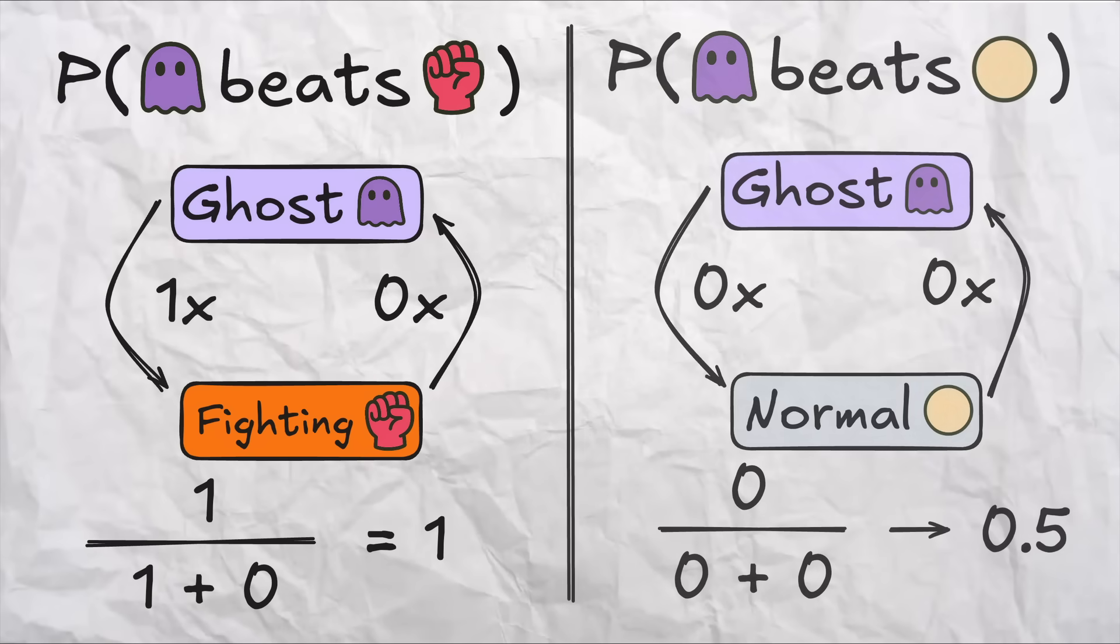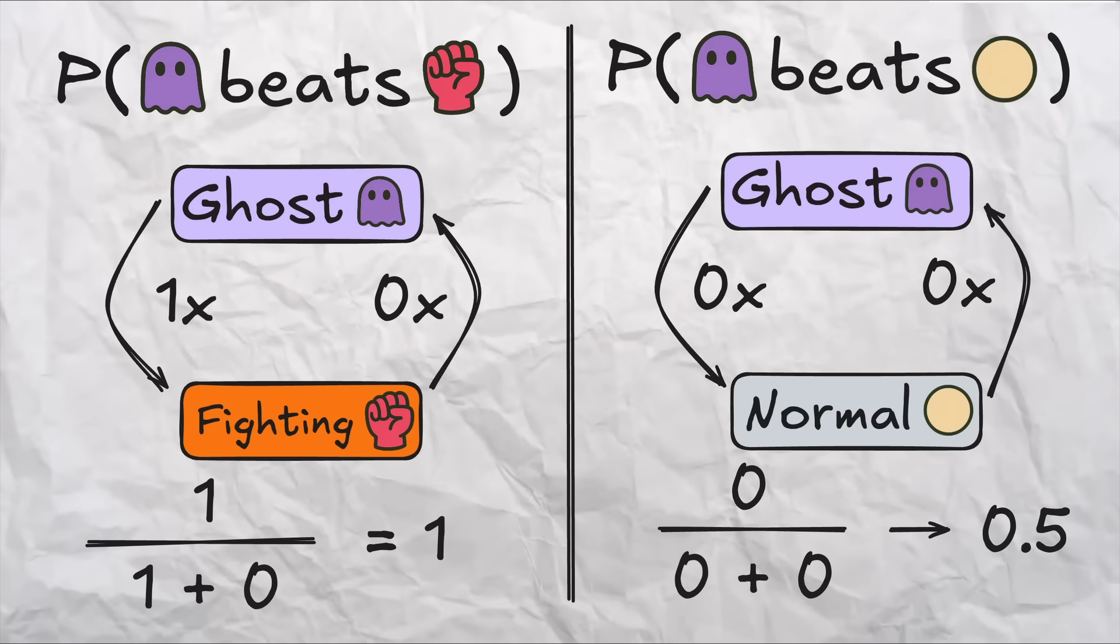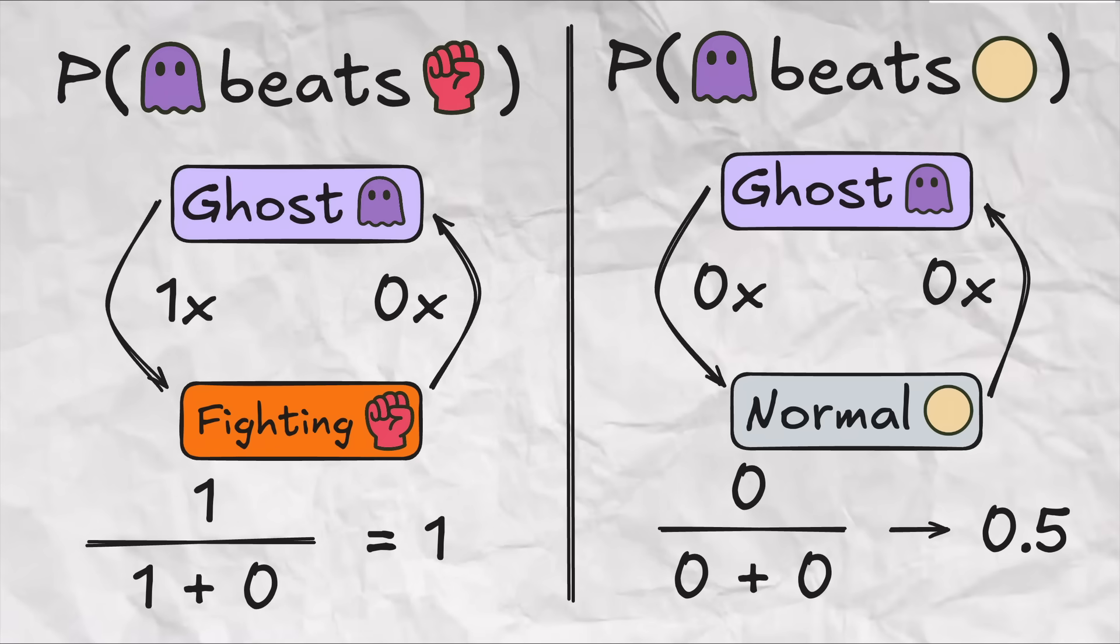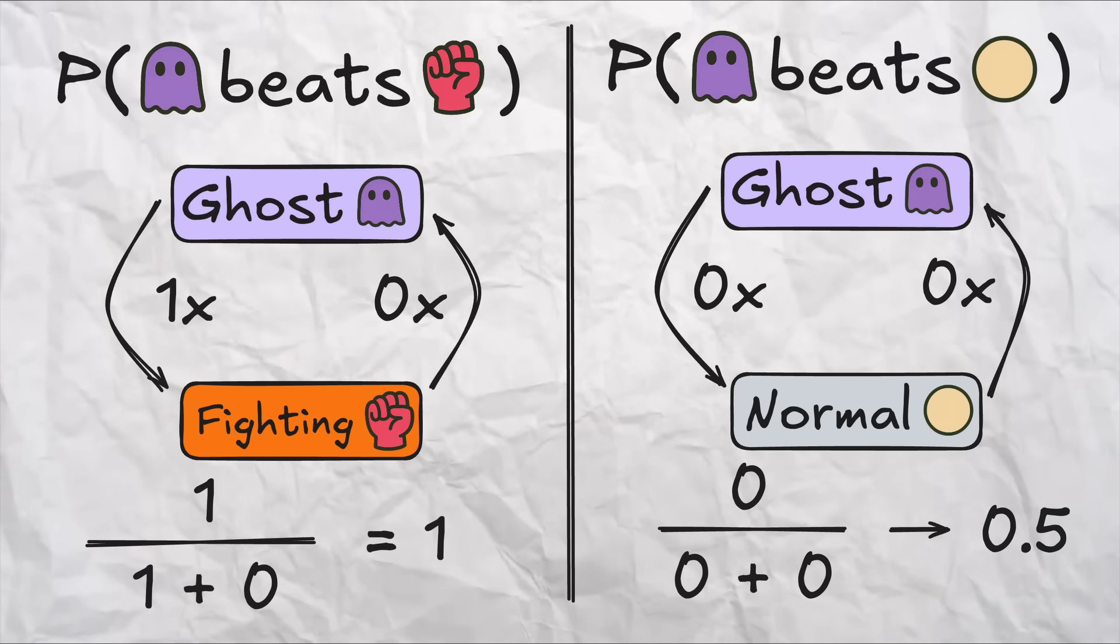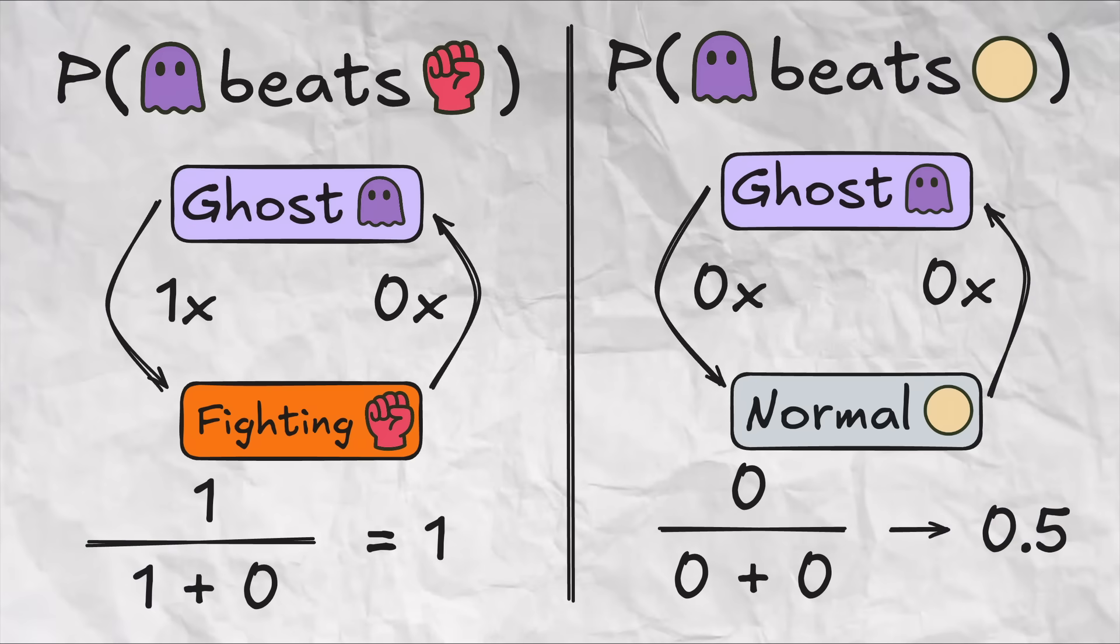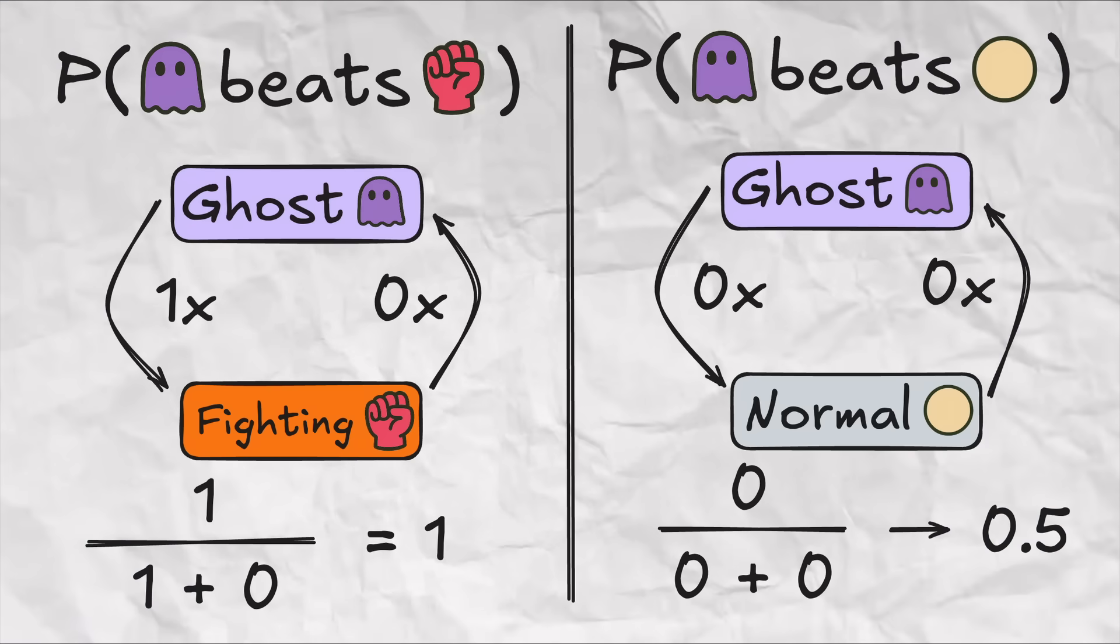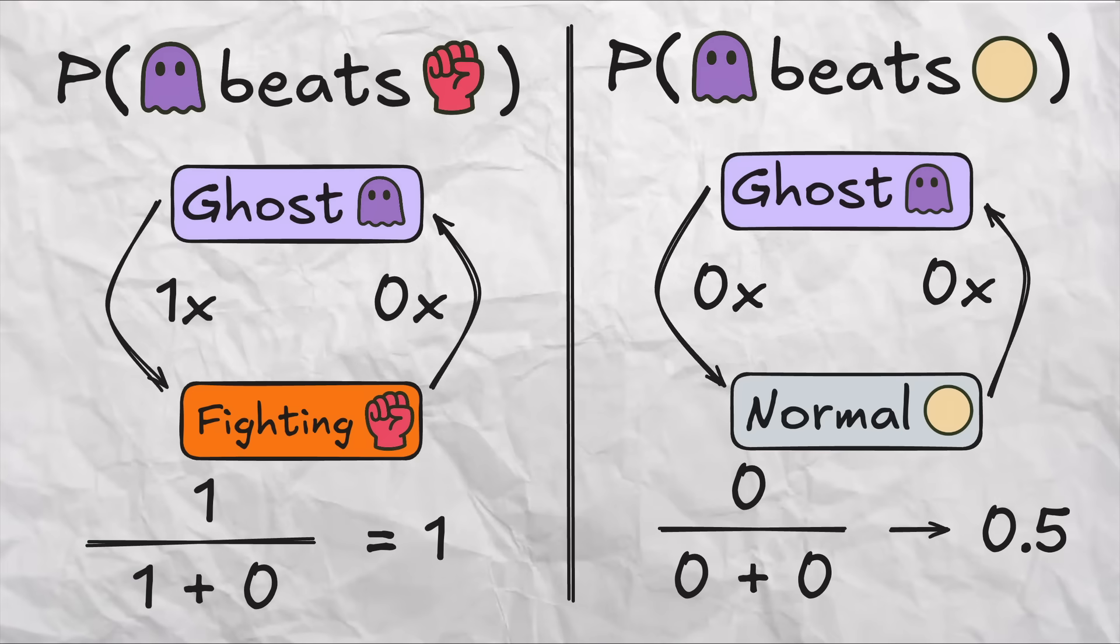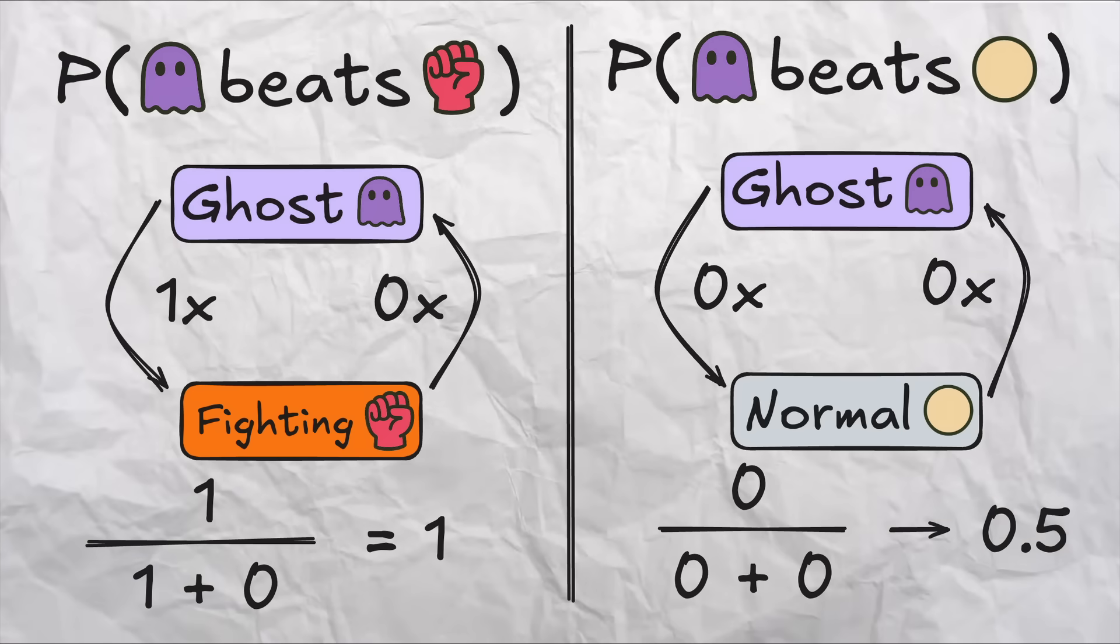The only place we run into a small issue is with symmetric immunity relationships, like with normal and ghost. Technically we would get both probability ghost beats normal and probability normal beats ghost as zero divided by the sum of zero and zero, which is technically undefined, but if we think about it in context for a second, we see that both of these should really be 0.5, since this is basically a stalemate between two types that mutually cannot touch each other.